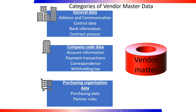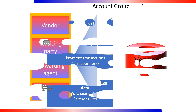Purchasing Organization Data is maintained for each purchasing organization. It includes the purchase order currency, incoterms, partner roles, purchasing data, and various controls pertaining to the vendor. You can also maintain different data for specific plants or for vendor subranges.